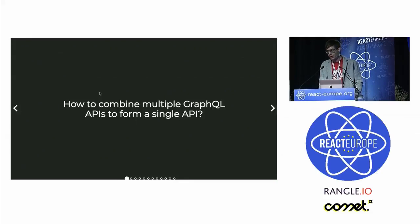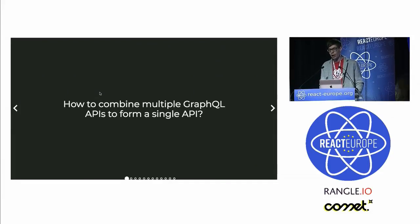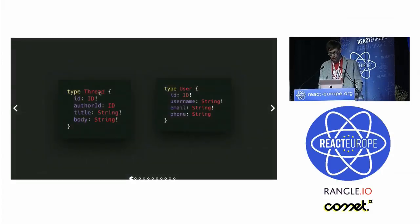One problem I stumbled upon a while ago was that we had two separate GraphQL APIs and we had to find a way to combine the two, because we needed to do queries that ended up hitting both of the APIs at the same time.